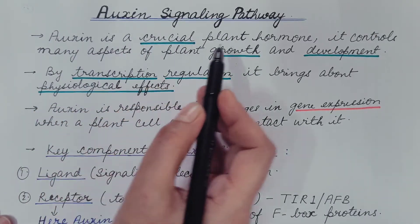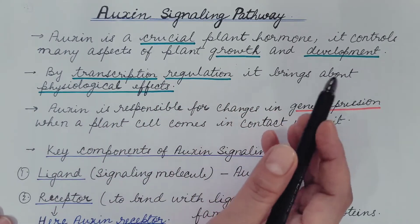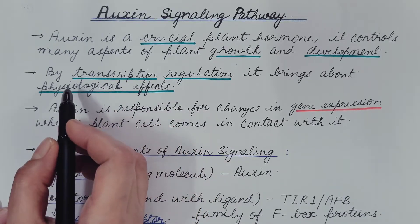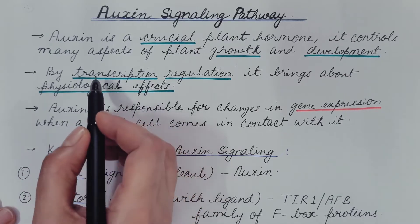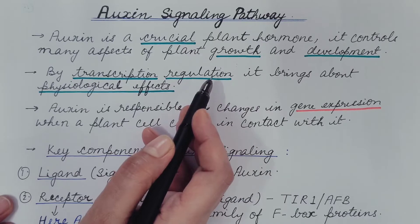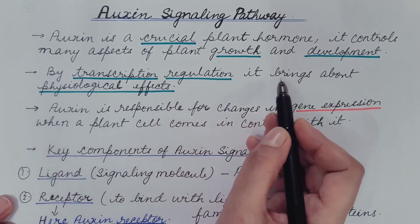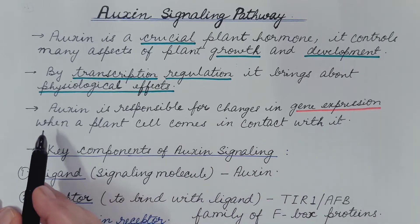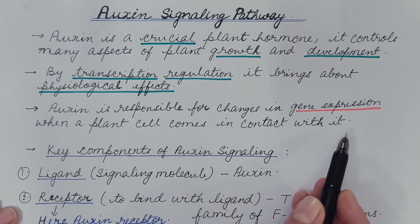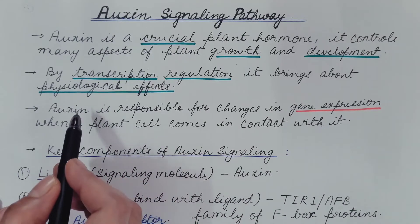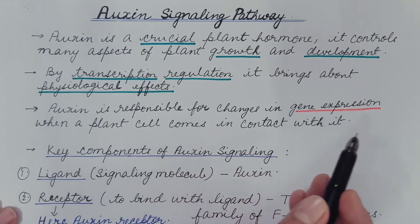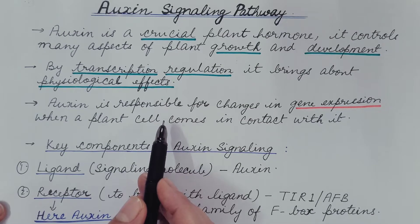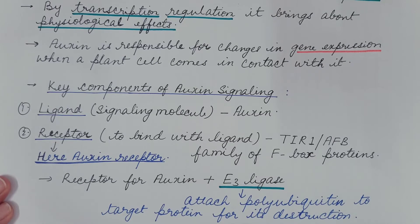Auxin is a crucial plant hormone — it controls many aspects of plant growth and development, meaning it has many physiological effects. These physiological effects are brought about by transcription regulation. Auxin is responsible for changes in gene expression when a plant cell comes in contact with it, resulting in up-regulation or down-regulation of genes.